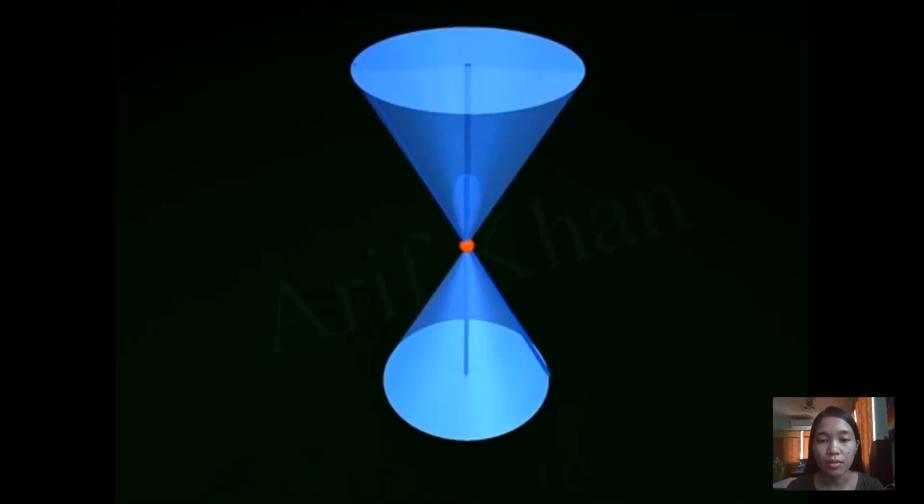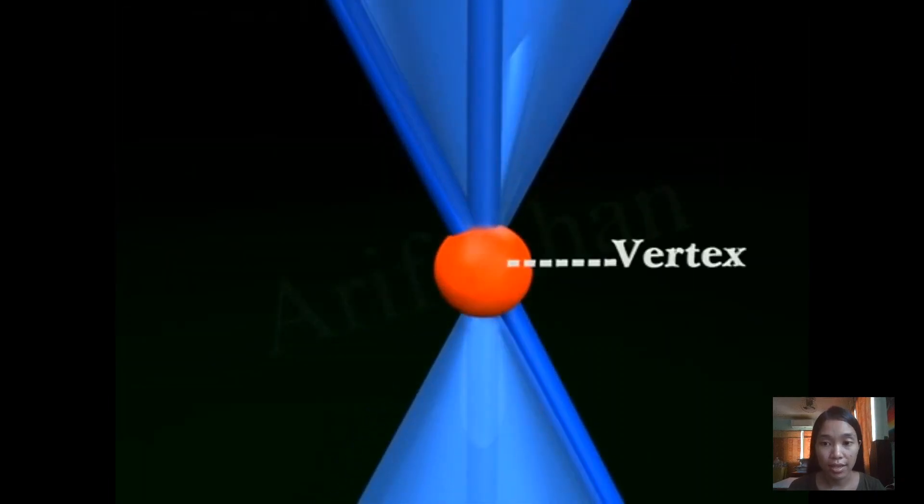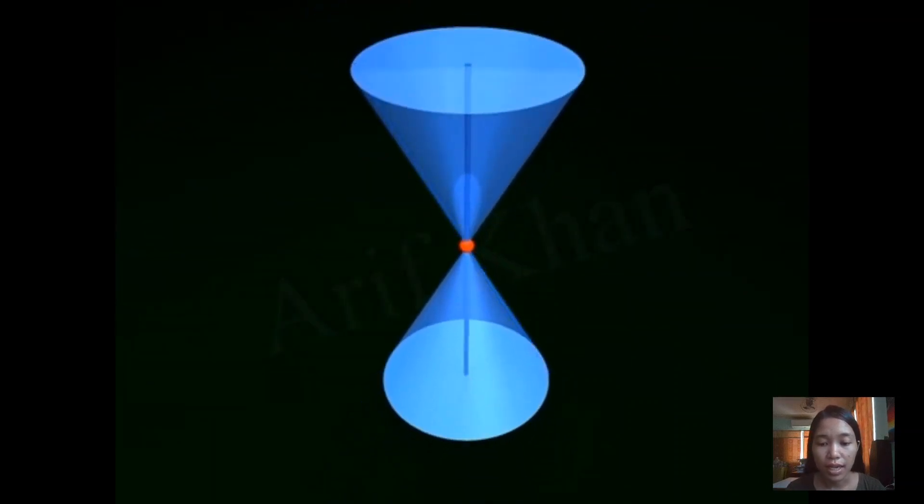A double right circular cone has two cones joined at a fixed point called the vertex. That's the vertex. And the line that rotates around that vertex, we call the generator. That's the line. And we call the vertical line the axis, because it doesn't move.